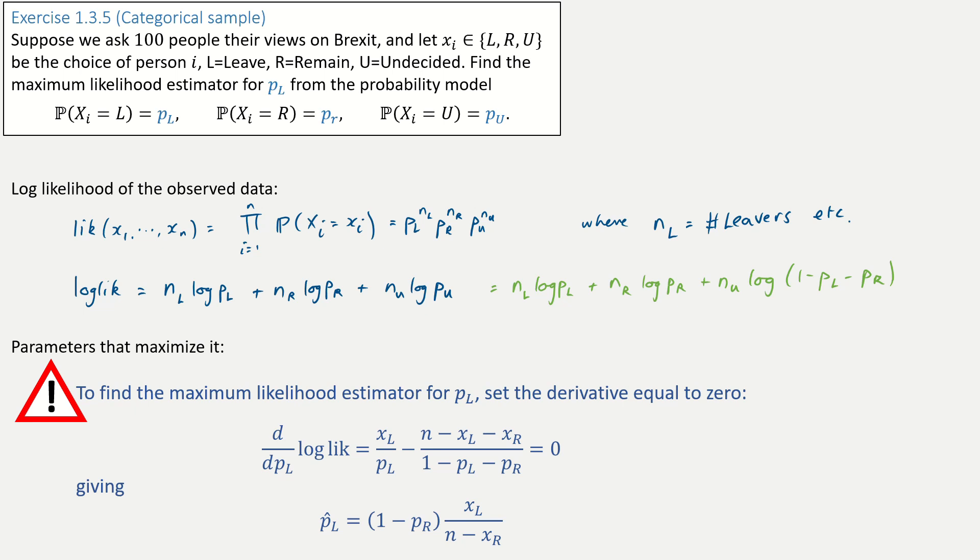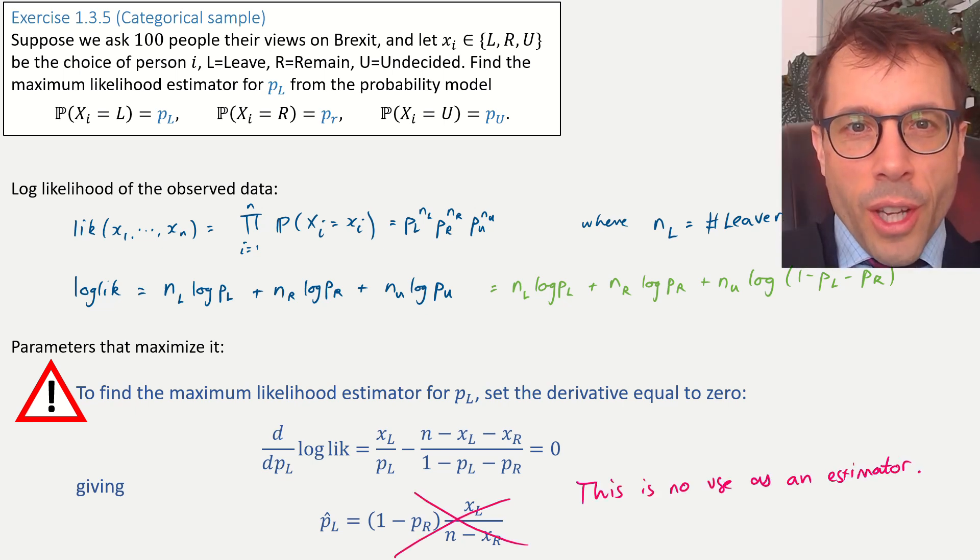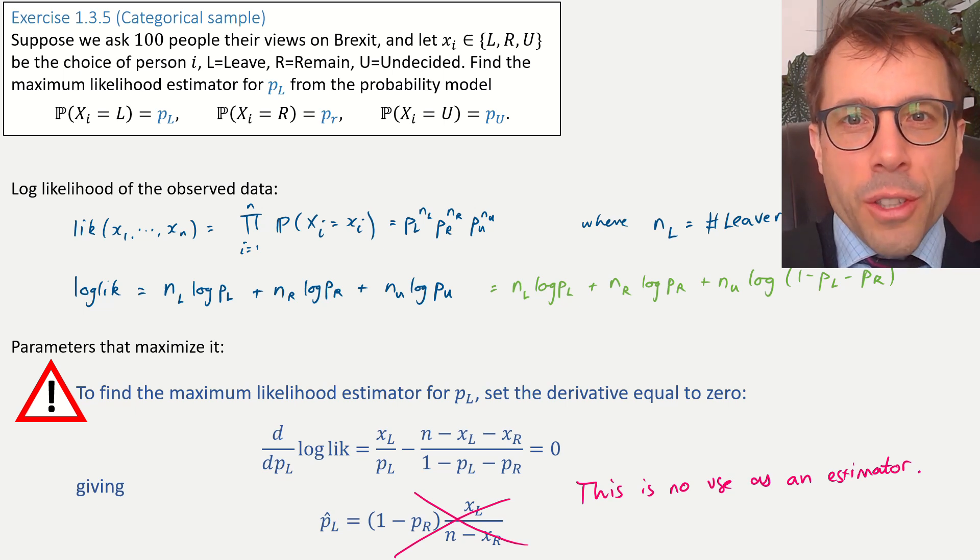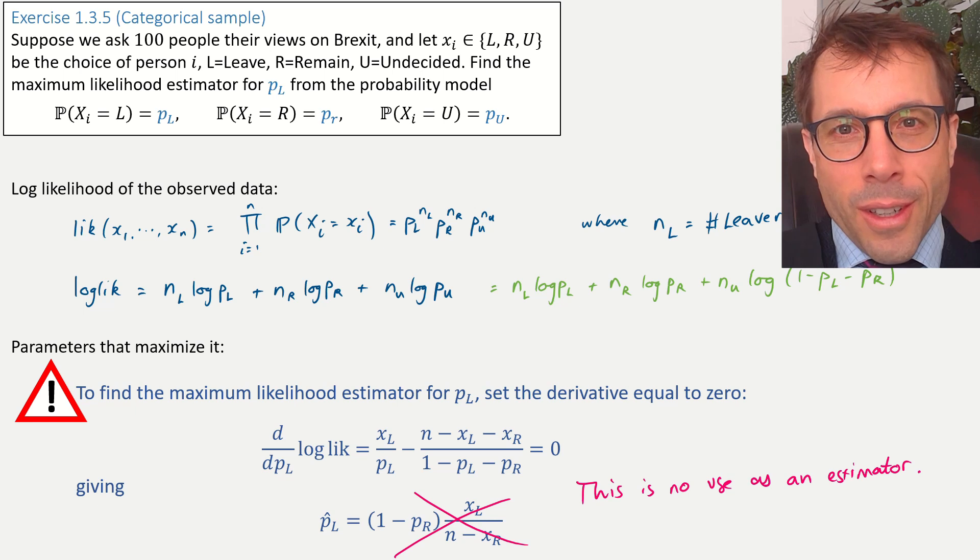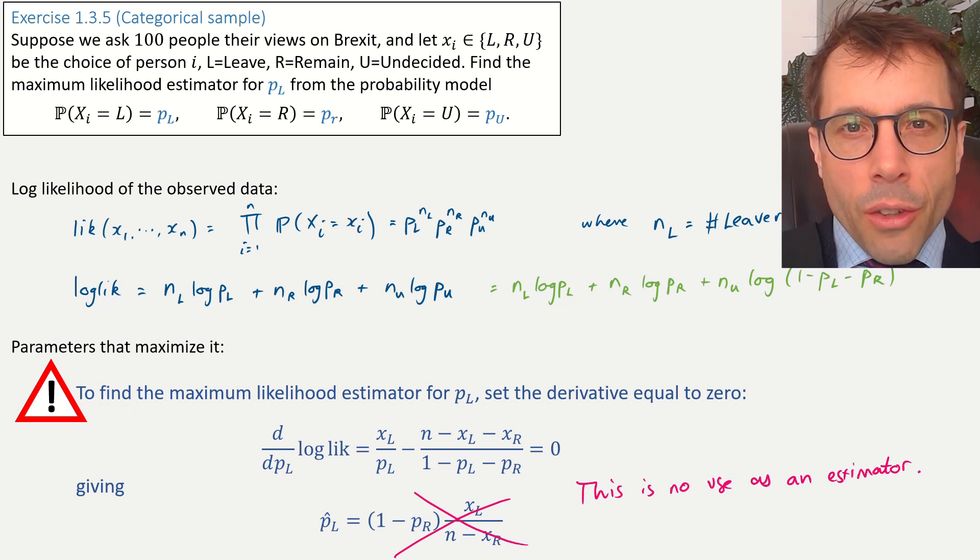But the problem is, this answer is no use, because the answer involves PR, and we don't know what PR is. The job of an estimator is to give us an estimate for an unknown parameter. And what's the use in an estimate for PL that depends on something we don't know? To emphasize this, here's the word to look out for, estimator. Sometimes MLE is written maximum likelihood estimator. The whole point of this word is that an estimator is something that takes in the dataset we have and produces an estimate. It's a function whose job it is to produce an estimate. It's not allowed to depend on things we don't know. It's only allowed to depend on the dataset we're given.